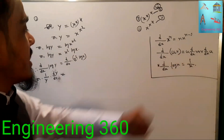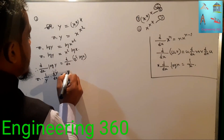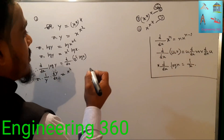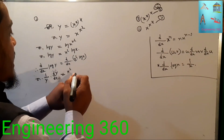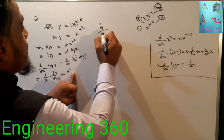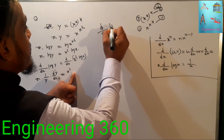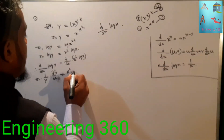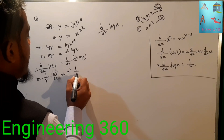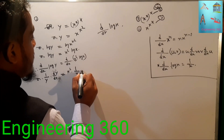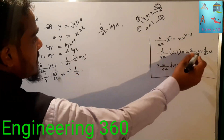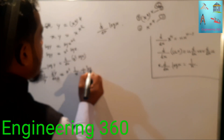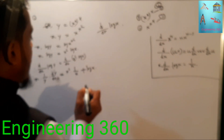Applying the product rule: d/dx(x squared · log x) equals x squared times d/dx(log x) plus log x times d/dx(x squared). Now d/dx of log x equals 1 by x, and d/dx of x squared equals 2x.